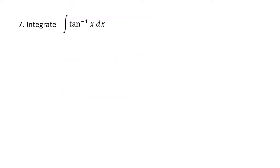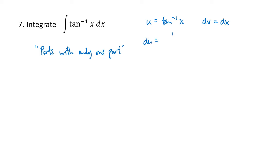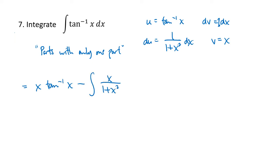Here's another example of parts with only one part. We've just got the inverse tan function, so we make that be our u and our dv is just dx. So du is the derivative of inverse tan, which is 1 over 1 plus x squared, and v — thinking of there being a 1 in there — the antiderivative of 1 is just x. So we get u times v: x times inverse tan of x, minus the integral of v du, which is x divided by 1 plus x squared dx.